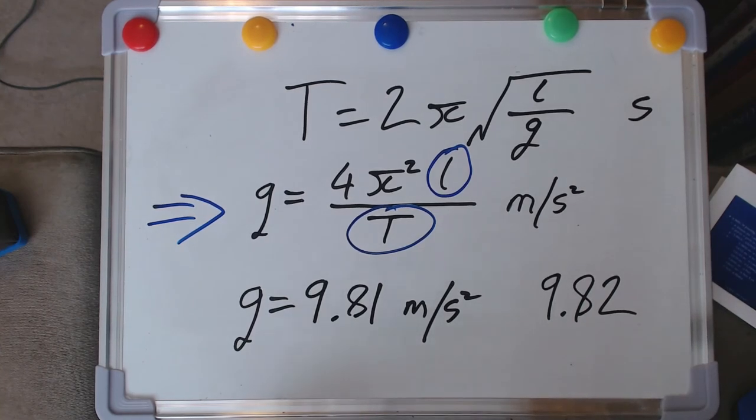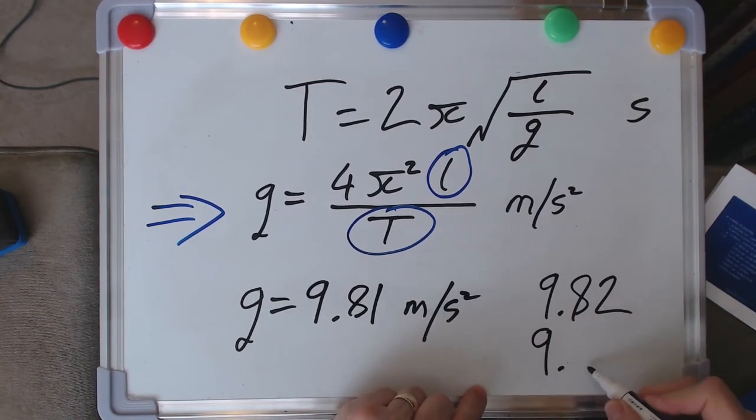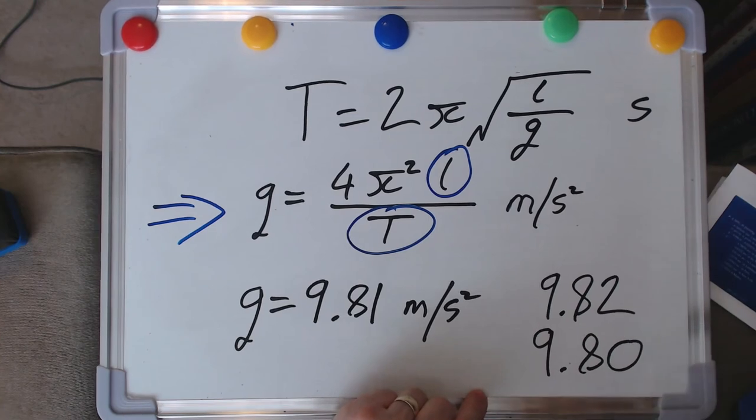And if we then go, let me see, let's go over to Paris, for instance, no, New York, let's try New York. In New York, the value drops to 9.80.